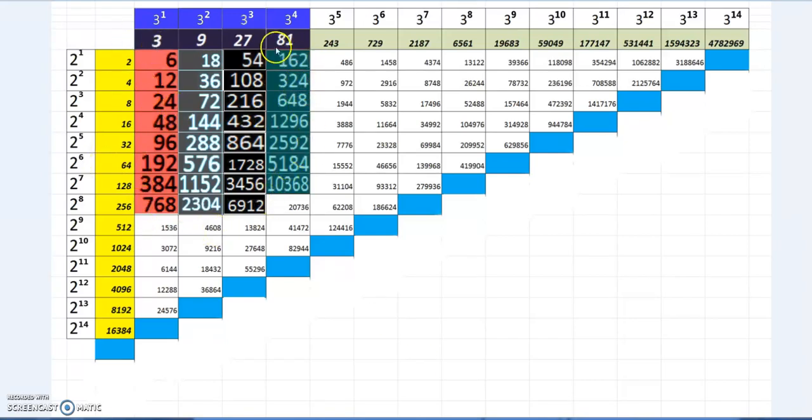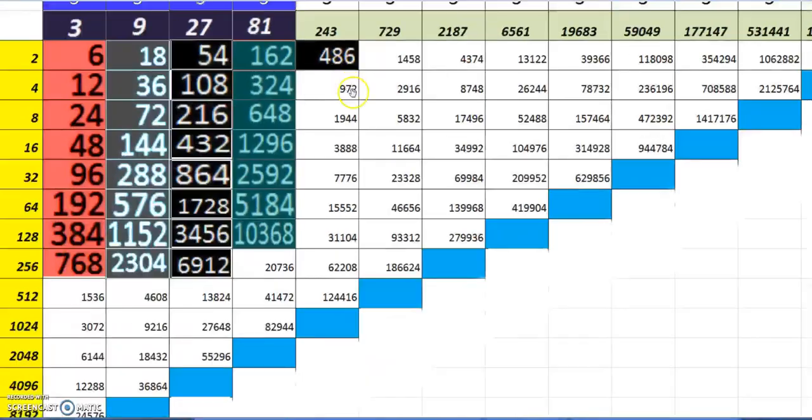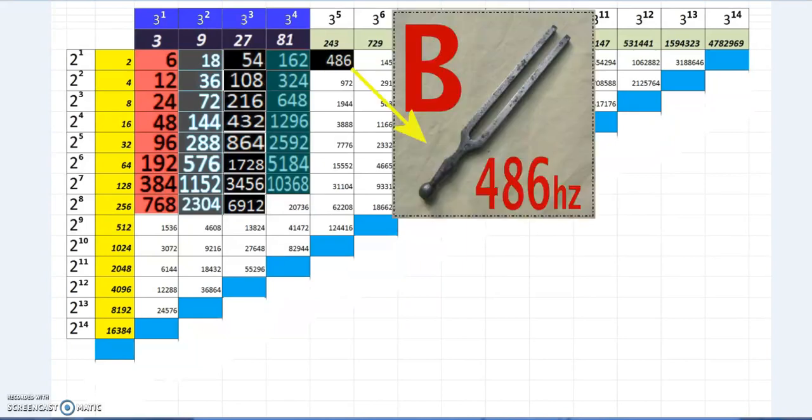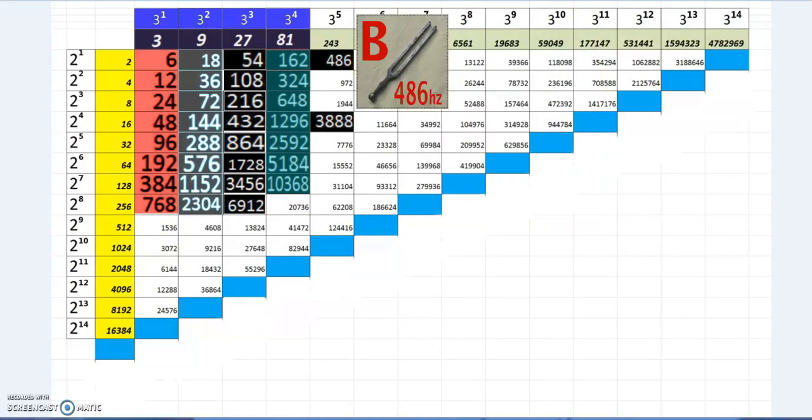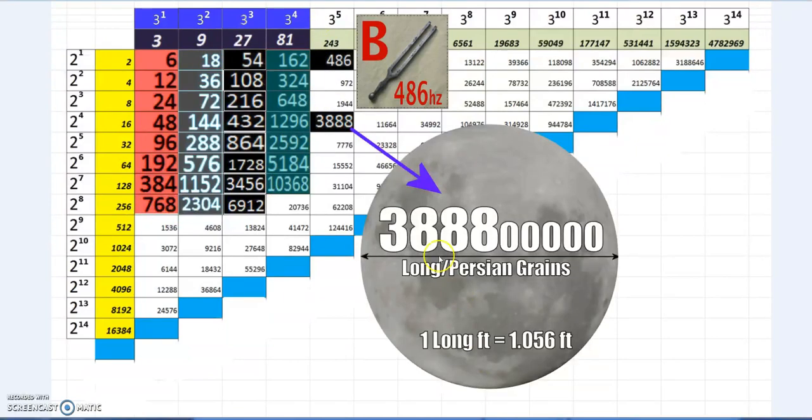These are the numbers we've gone through before—links will be in the description to the early ones. Now we go to the next column: 486, which in Pythagorean tuning is B. This is the really chunky area—the most heavy in cool info.